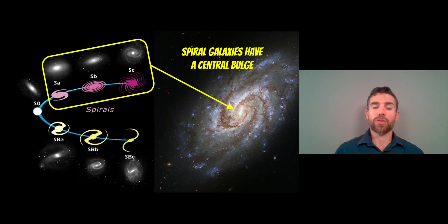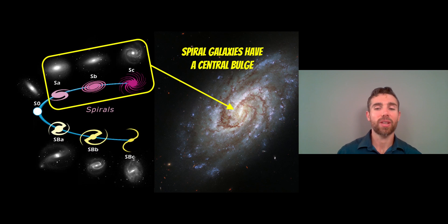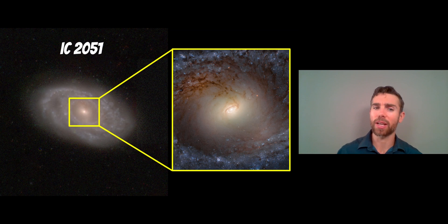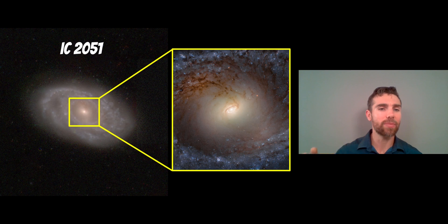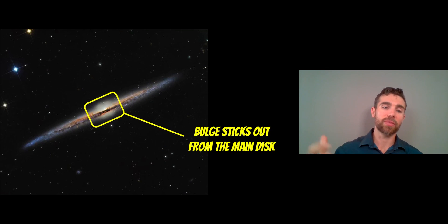Normal spiral galaxies have a central bulge — a spherical bulge right in the center of the galaxy. Here's an example zoomed in: this is IC2051, and in the zoomed-in section you can see the bright central region, which is separate from the disc-like structure. Spiral galaxies have stars orbiting in a disc in a common direction, fairly thin. But the central bulge is more spherical, so when viewed edge-on you can see it sticking above and below the main disc.